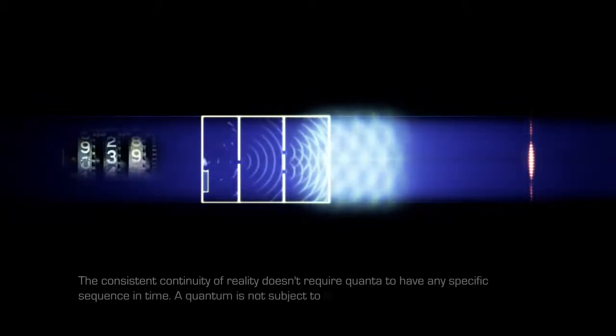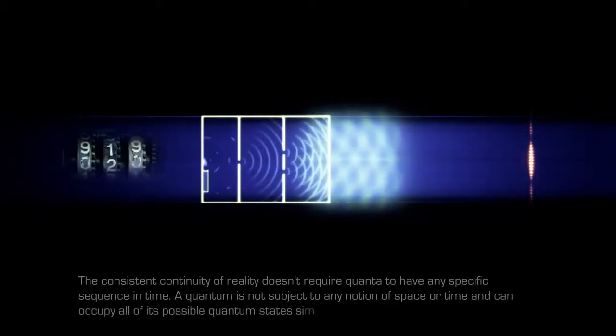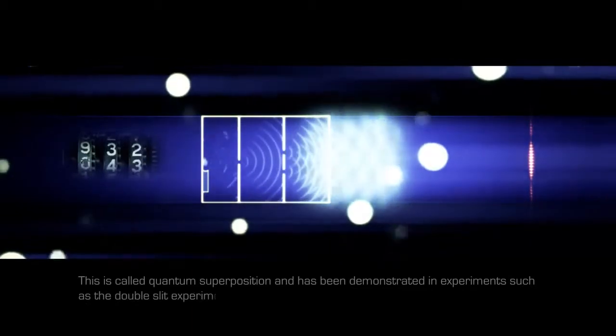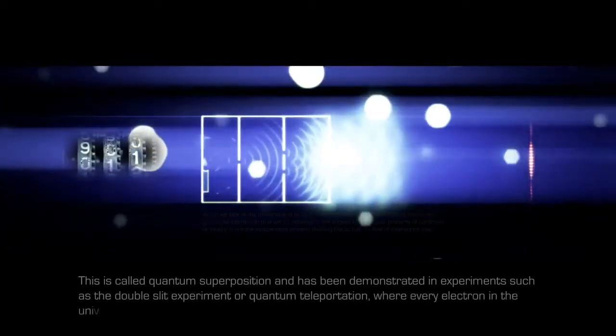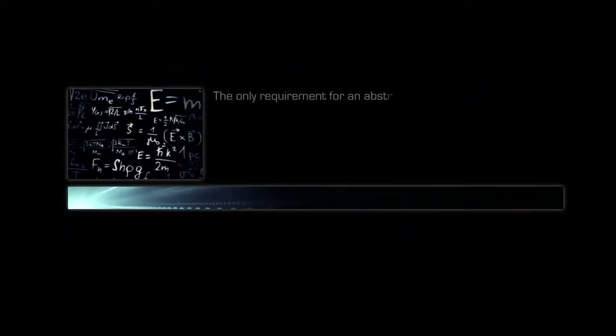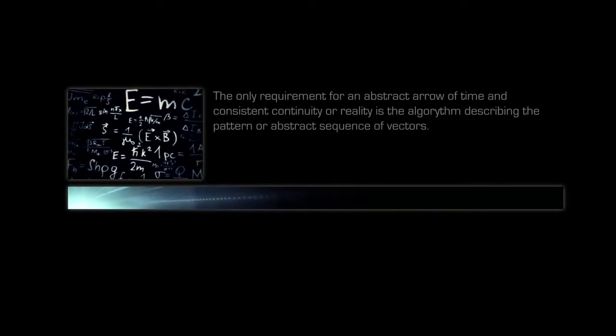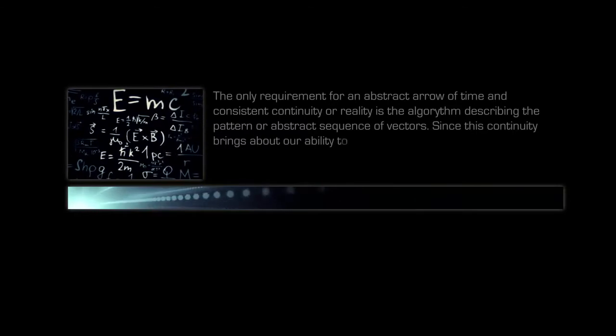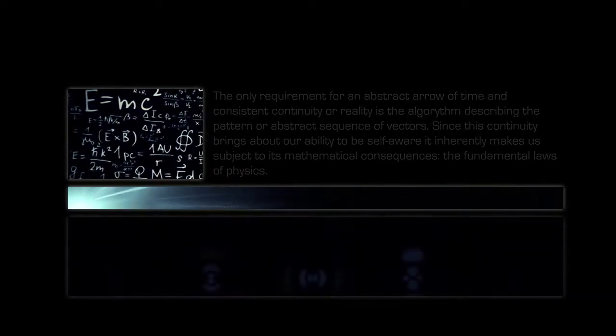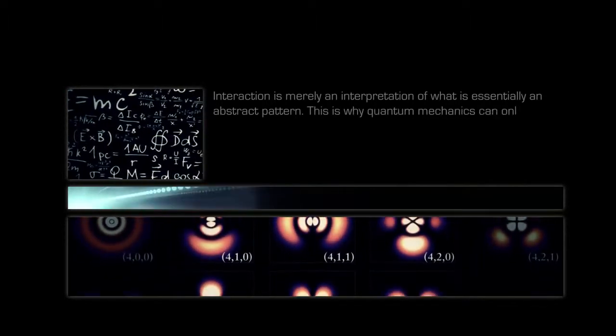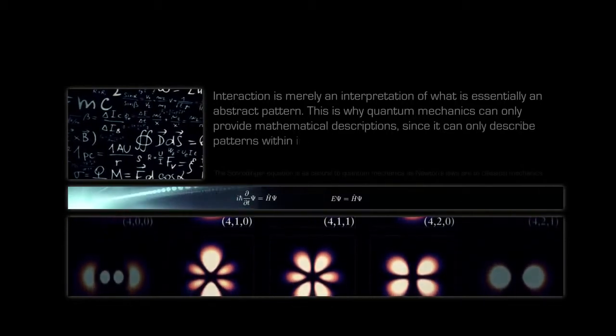The consistent continuity of reality does not require quanta to have any specific effects sequence in time. A quantum is not subject to any notion of space or time and can occupy all of its possible quantum states simultaneously. This is called quantum superposition and has been demonstrated in experiments such as the double slit experiment or quantum teleportation, where every electron in the universe, for example, could be the exact same one. The only requirement for an abstract arrow of time and consistent continuity or reality is the algorithm describing the pattern or abstract sequence of vectors. Since this continuity brings about our ability to be self-aware, it inherently makes us subject to its mathematical consequences, the fundamental laws of physics. Interaction is merely an interpretation of what is essentially an abstract pattern. This is why quantum mechanics can only provide mathematical descriptions, since it can only describe patterns within infinite probabilities.